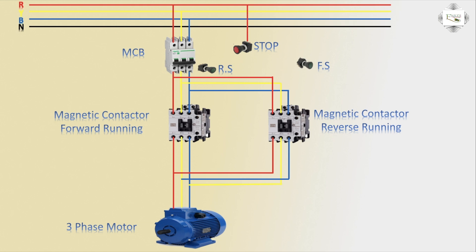First, stop switch connection, then phase to RS. FS switch connection to phase. FS connection outlet to the NC connection of the second magnetic contact.